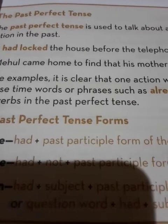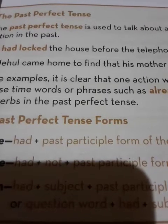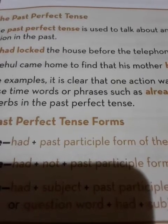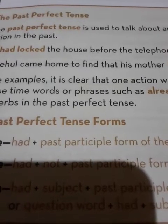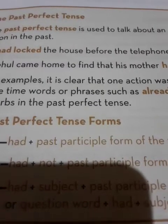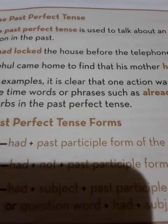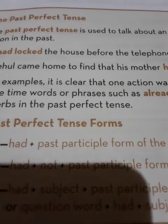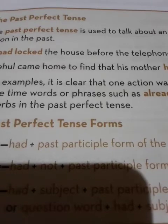Past perfect tense indicates a past action that had been completed before the start of another past action. For example, the patient had died before the doctor came. This sentence shows that the patient had died in the past before another past action occurred, that is, the doctor came.